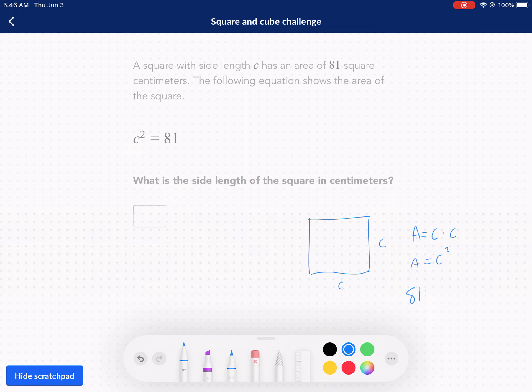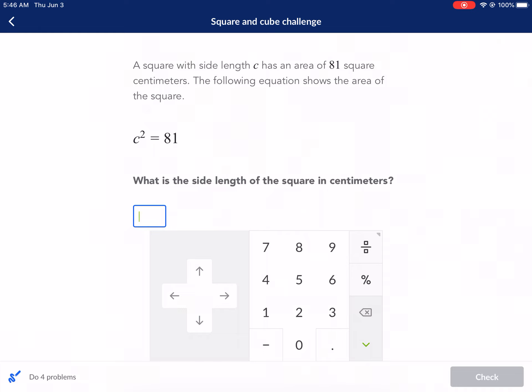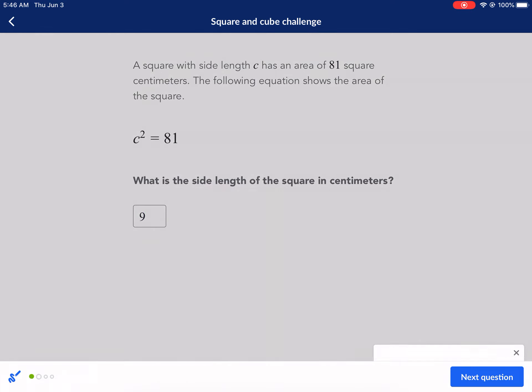So if we know the area is 81, essentially what we just need to do is take the square root of 81 and that will tell us what our missing side length is going to be. So then we just take the square root of 81. What number times itself? There's an implied two there for square roots. It's nine. And it's not negative nine because you can't have a negative side length.